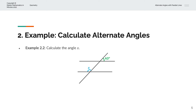In the second example, we're asked to calculate the angle X. Once again, we can recognize these two lines as parallel lines, and we have a third intersecting line. We're given that angle as 40 degrees and asked to find X. We can recognize that the alternate angle of X is here, and we can label that angle as Y. There is that Z-shape: a horizontal line, a vertical line, and a horizontal line again.